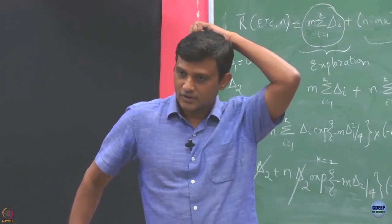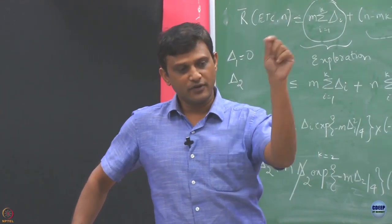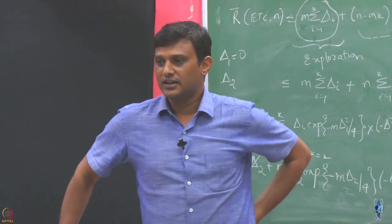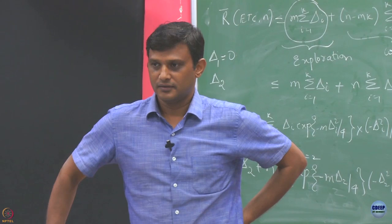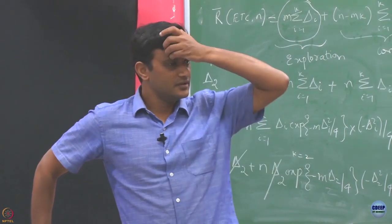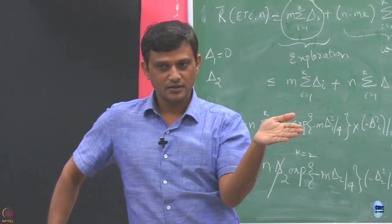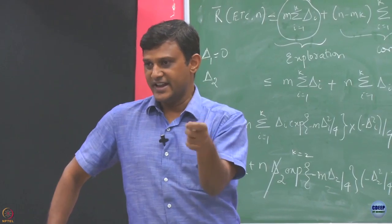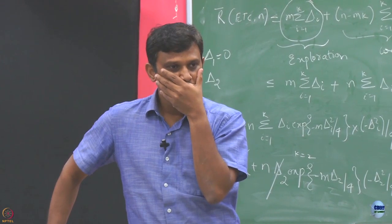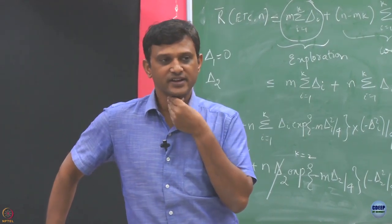What is greedy? You go and sample each arm once — or maybe sample each one for a certain number of rounds — and after that commit to the one which gives the best empirical mean. Then in every round you pick the empirically best arm and play it, updating means each round. That is a greedy version: instead of committing to one arm permanently, you explore initially and then in every round pick the arm with the highest empirical mean.